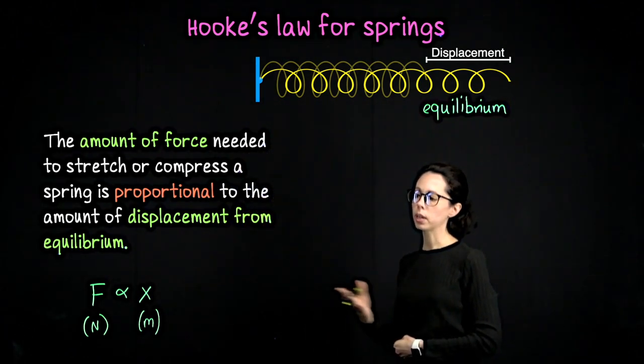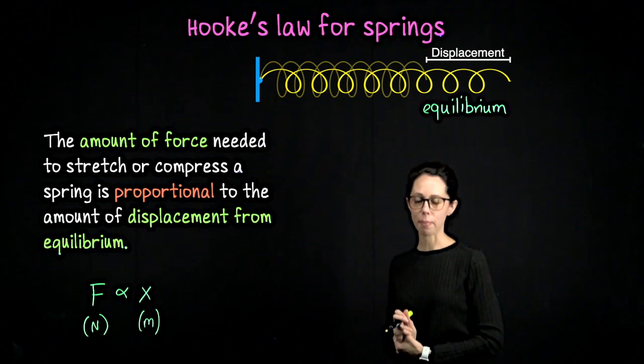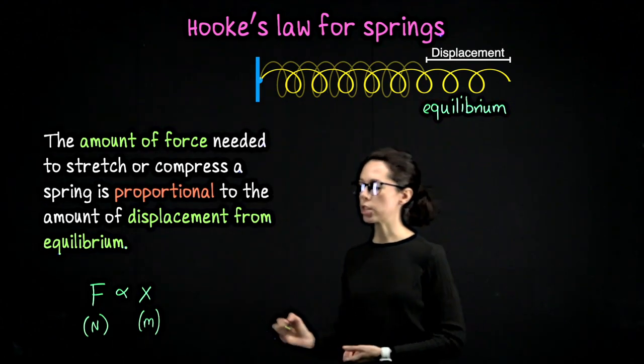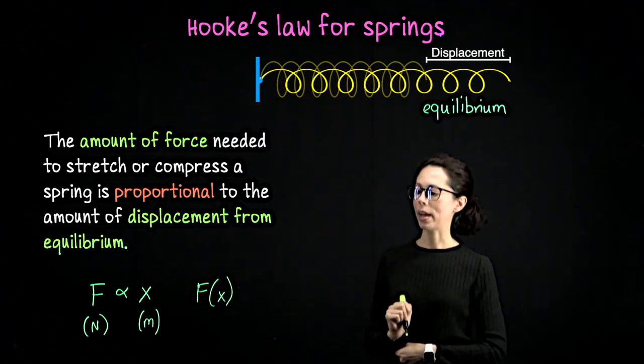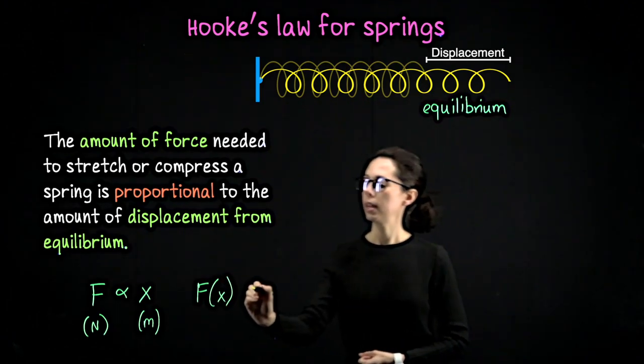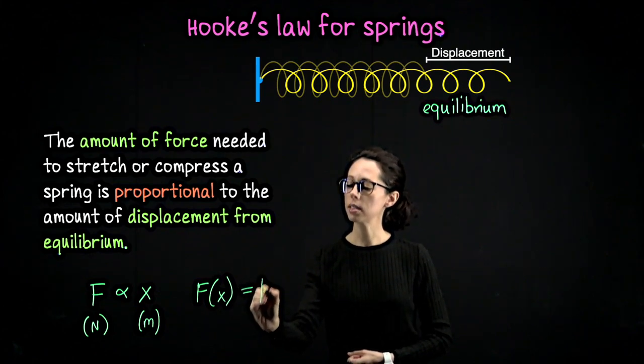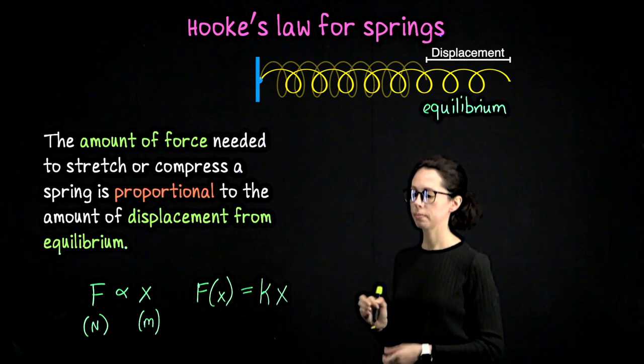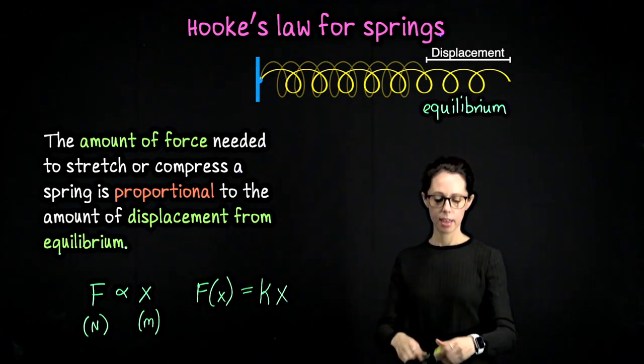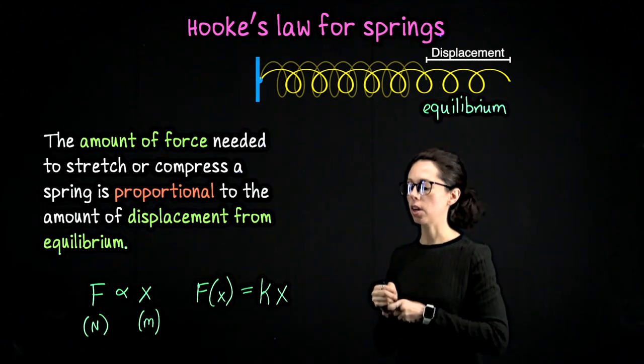If two quantities are proportional in mathematics, then we can set this up as an equation where the force needed to displace the spring by x meters is equal to a constant of proportionality times that amount of displacement. This constant of proportionality k is called the spring constant.